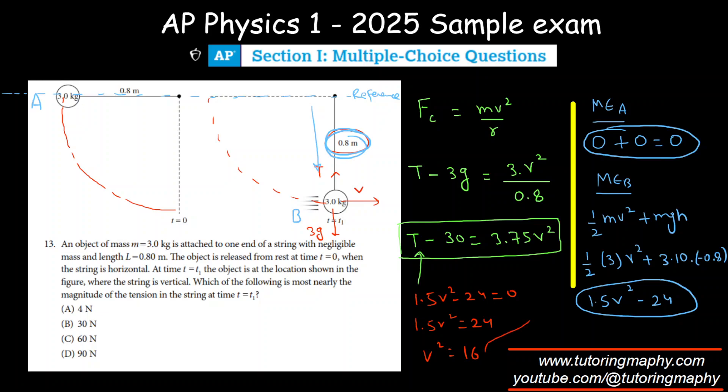I have no interest in taking the square root because I need v² here. So finally, I'm going to sub that in. T minus 30 equals 3.75 times v² is 16. Let's plug everything in the calculator and we should have an answer, which is 90 Newtons. That's the tension at the bottom. That was a good question.